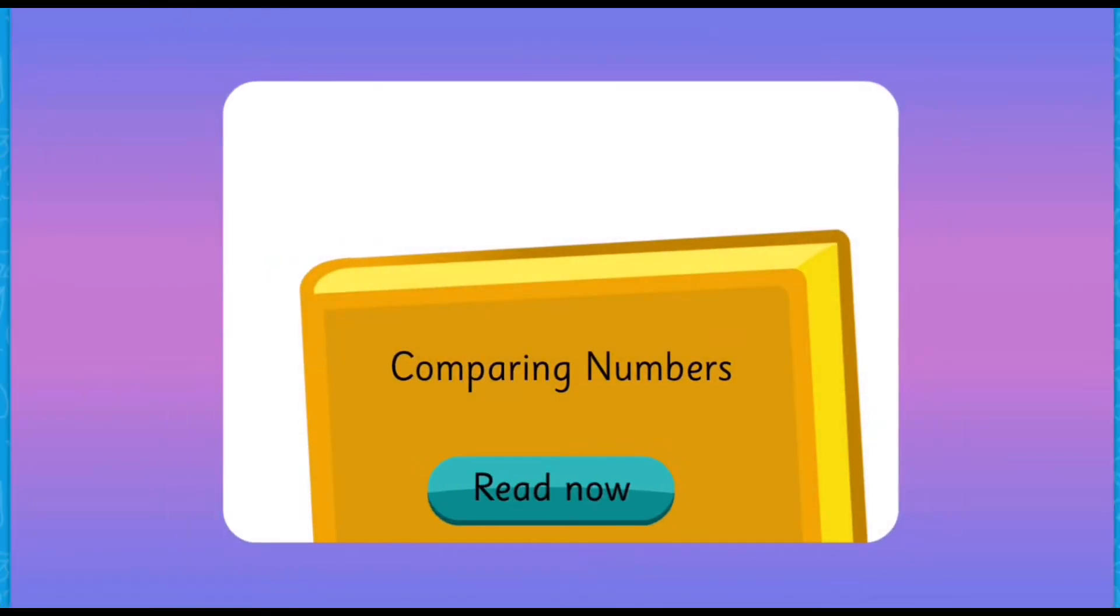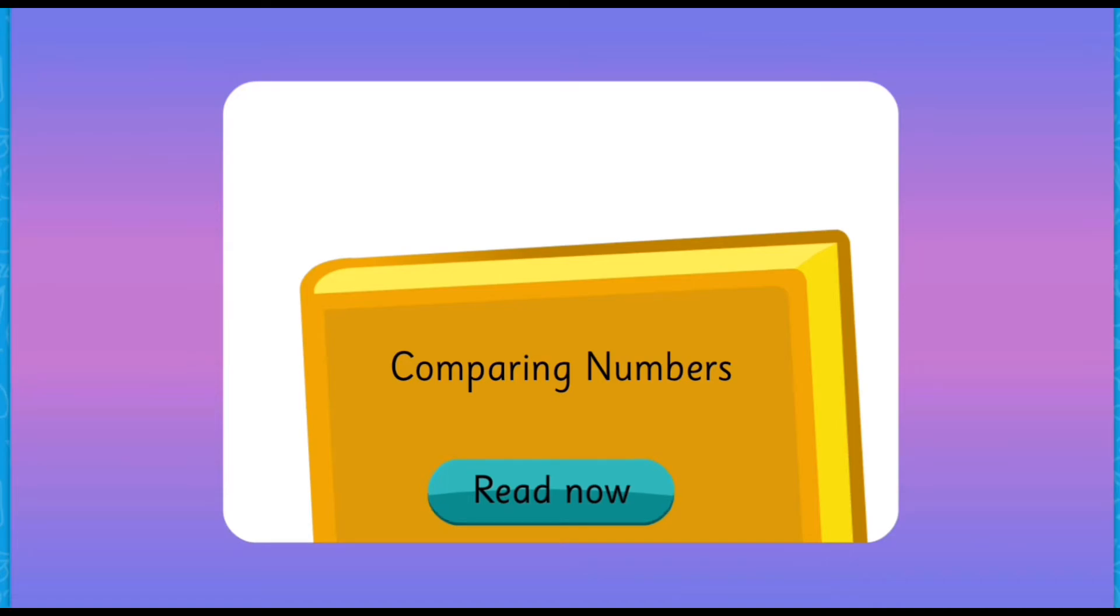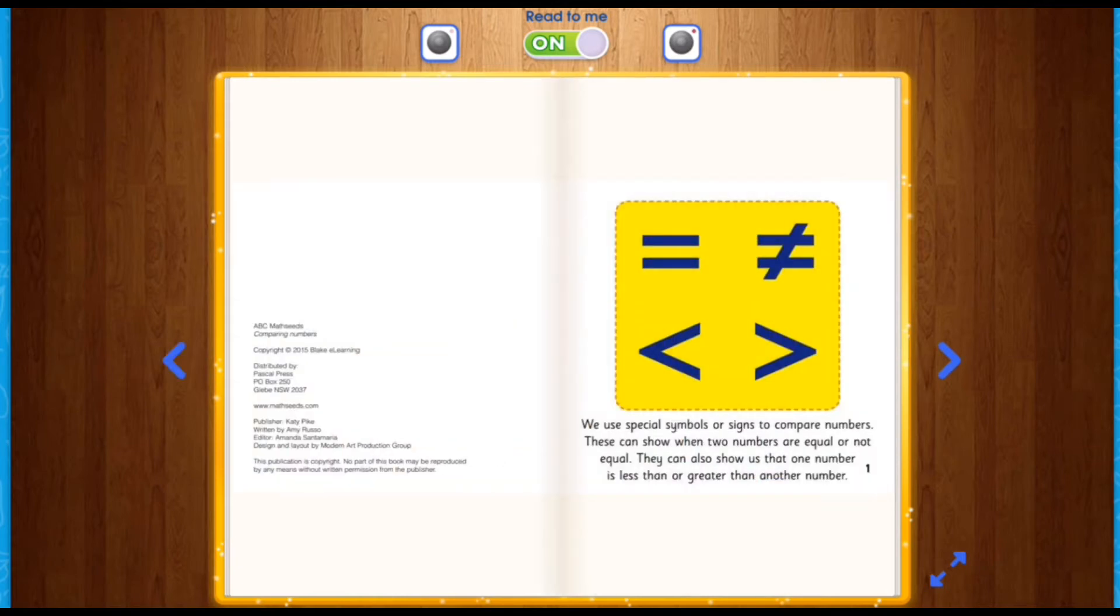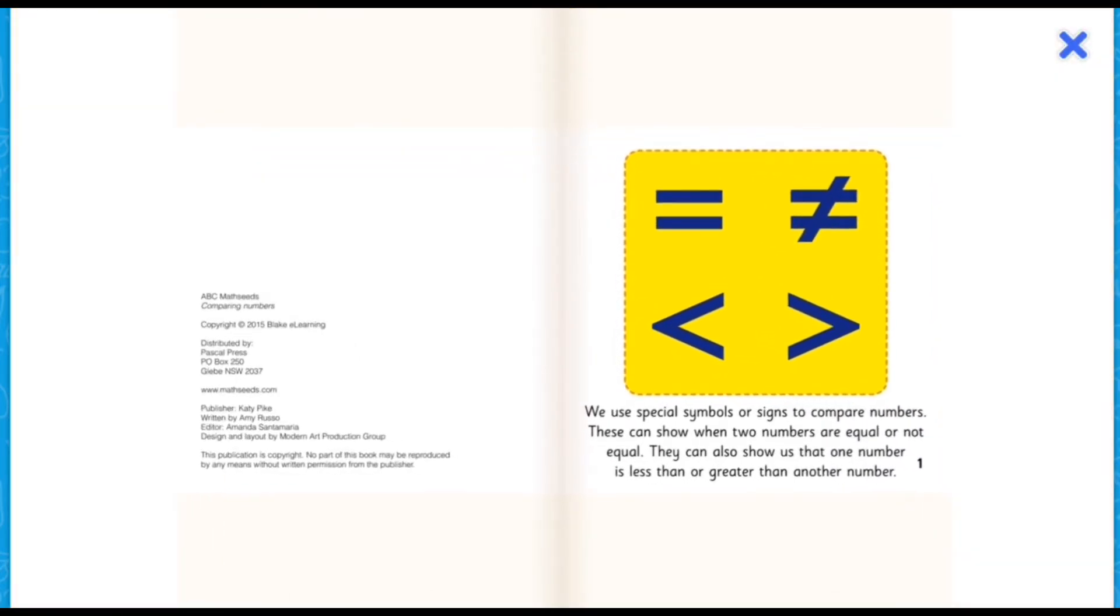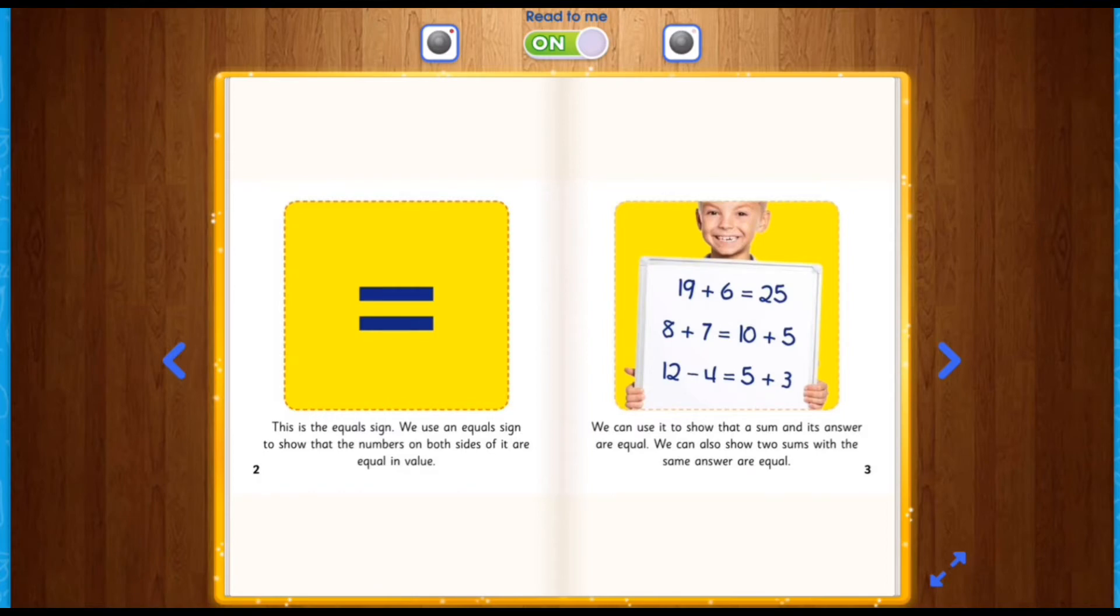A reading. Comparing numbers. Okay, so let's just start. Okay. We use special symbols or signs to compare numbers. These can show when two numbers are equal or not equal. They can also show us that one number is less than or greater than another number. We use an equal sign to show that the numbers on both sides of it are equal in value. We can use it to show that a sum and its answer are equal. We can also show two sums with the same answer are equal.